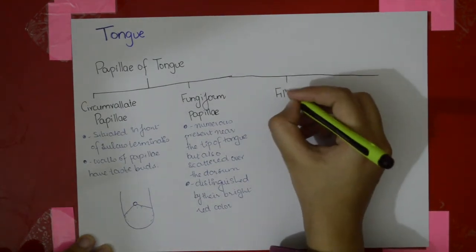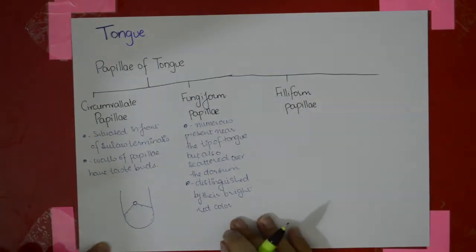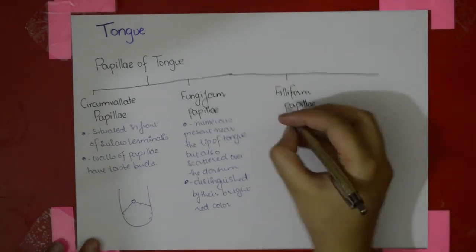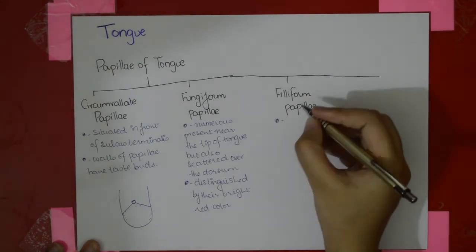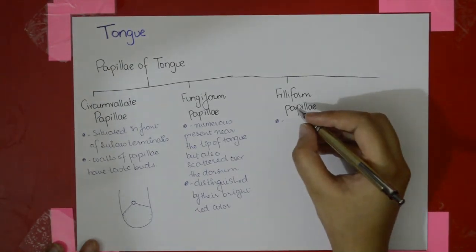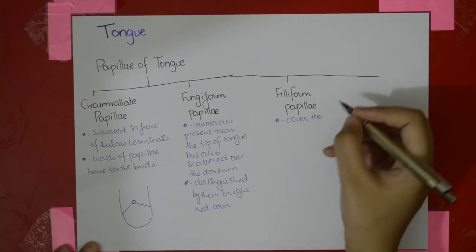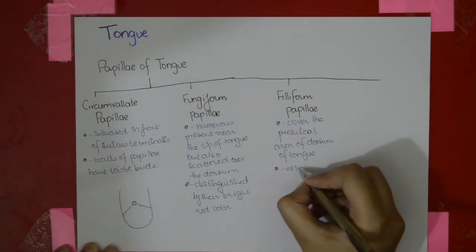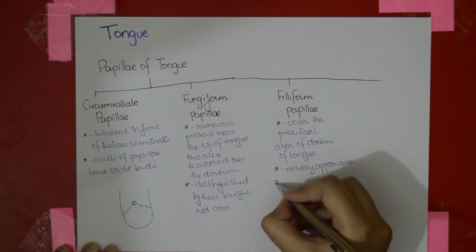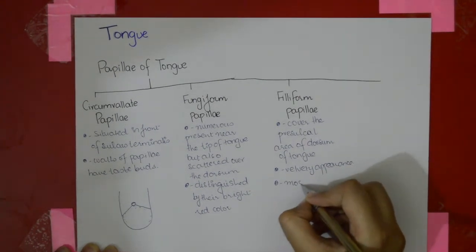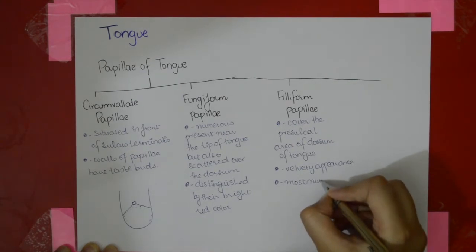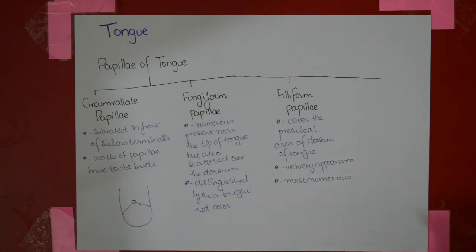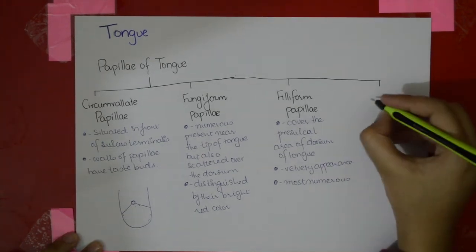The next are the filiform papillae. The filiform papillae are smaller than the fungiform papillae, but they are numerous. They cover the pre-sulcal area of the dorsum and give a velvety appearance. They are the most numerous of all the papillae. The next are the foliate papillae.